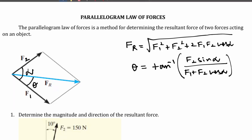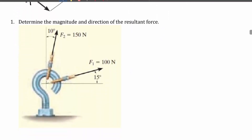This is the equation for calculating the inclination between F1 and the resultant force. Now let us solve a problem: determine the magnitude and direction of the resultant force. Two forces are given — F1 = 100 N and F2 = 150 N. Marking the inclination between these two forces as alpha: the overall inclination is 90°, minus 15° from the horizontal axis to F1, minus 10° from the vertical axis to F2, giving alpha = 65°.